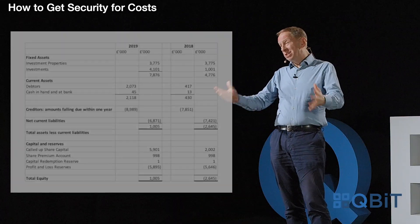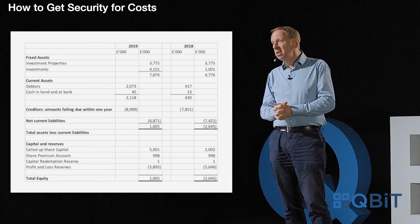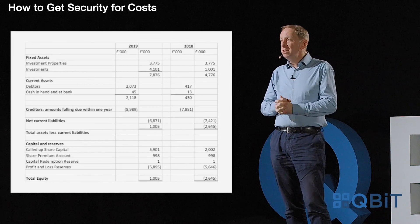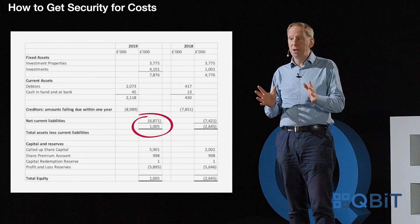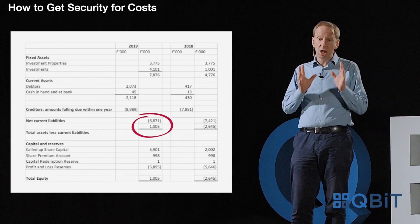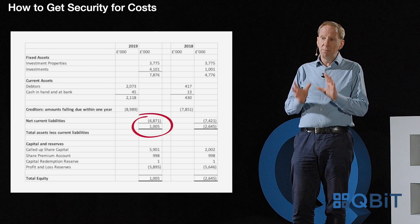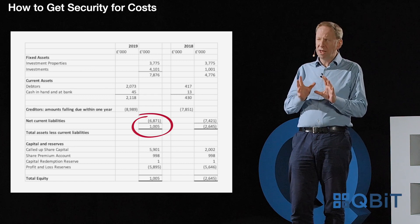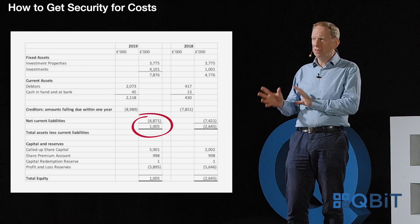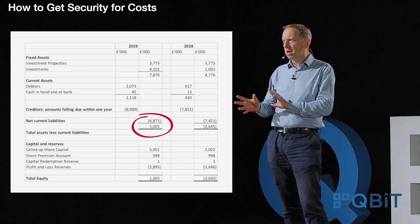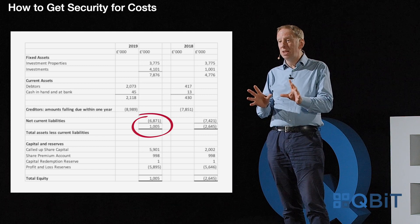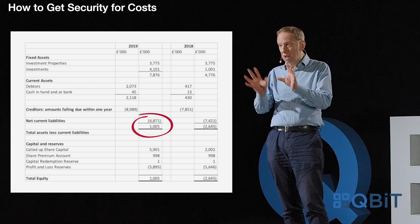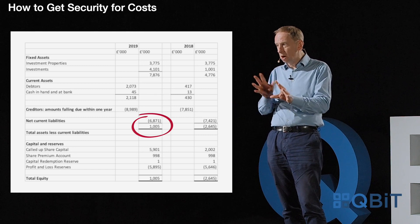In this particular balance sheet you can see that the net assets of the company are just over a million pounds — one thousand and five thousand pounds. And it's usually very easy in a balance sheet to work out what the net assets are.